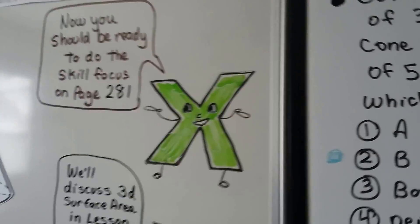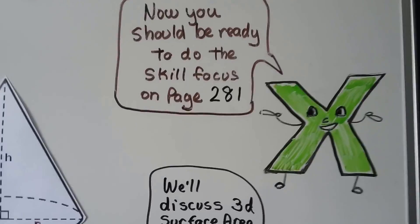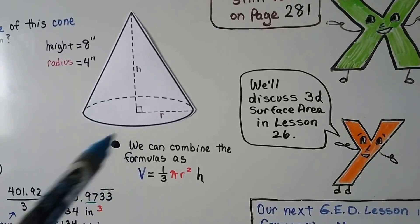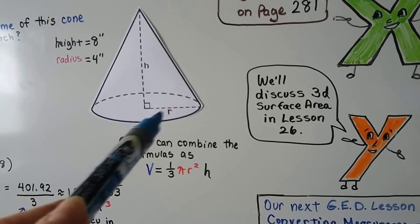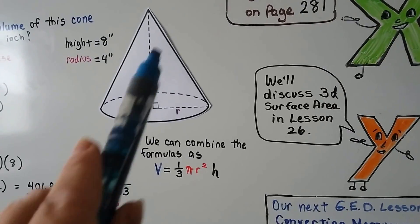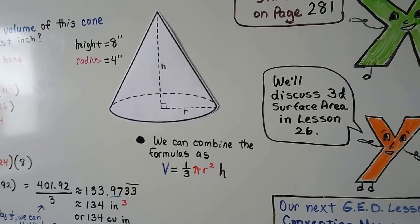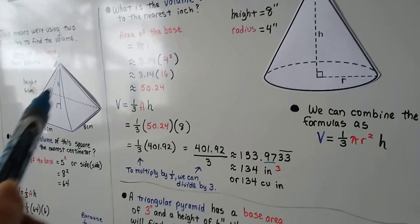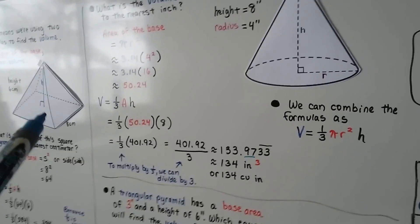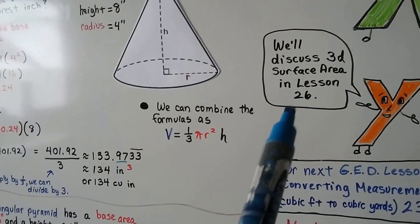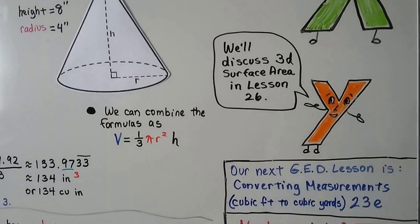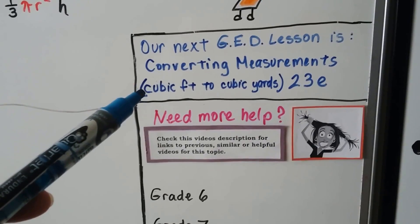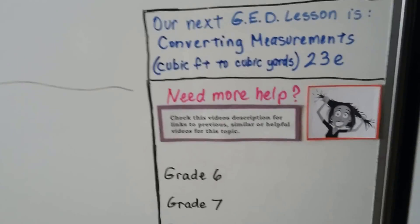You should now be ready to do the skill focus on page 281. And we've talked about the area of a 2D surface, like the area of a triangle, a circle, a rectangle. We did all that. Now we've talked about the volume, how many cubic inches it could hold. So we're going to discuss the surface area of a 3D shape, like all the surfaces, the four triangular sides and the square bottom. That surface area, we're going to talk about that in lesson 26. Our next lesson, we're going to talk about converting measurements. To convert cubic inches to cubic feet or cubic feet to cubic yards. That's the next lesson.